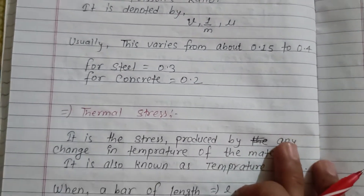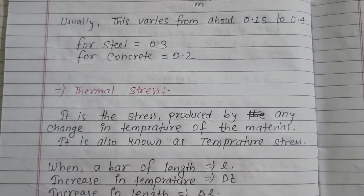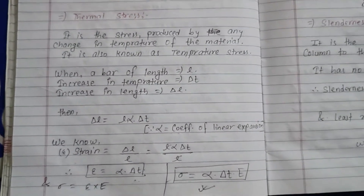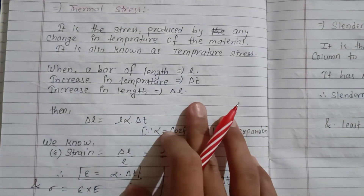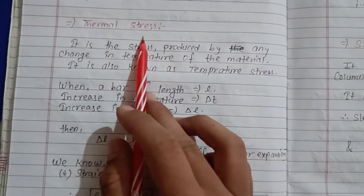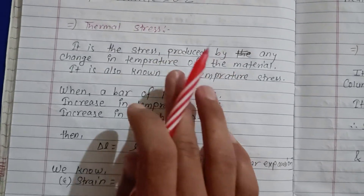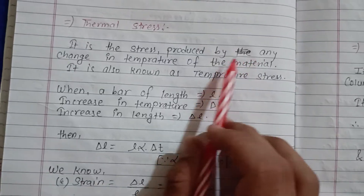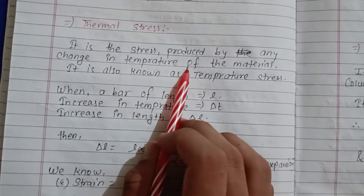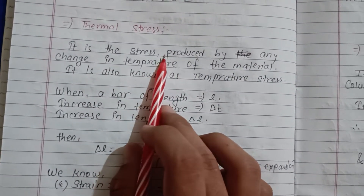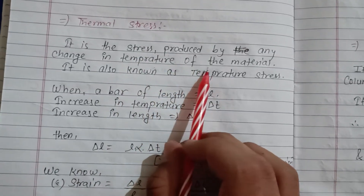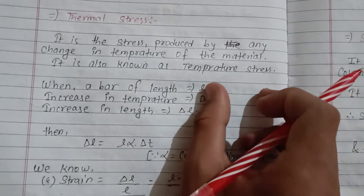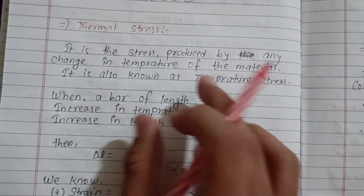Poisson's ratio is followed by thermal stress, which is both a short and long question. Thermal stress is the stress produced by any change in temperature. It is also known as temperature stress.